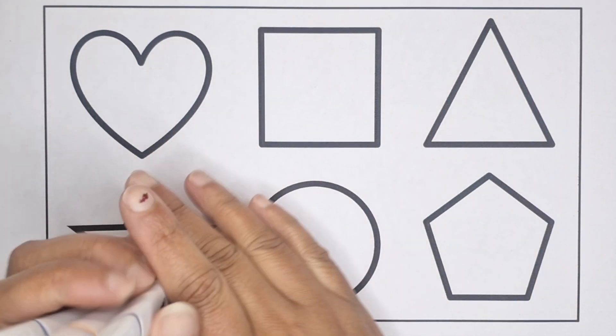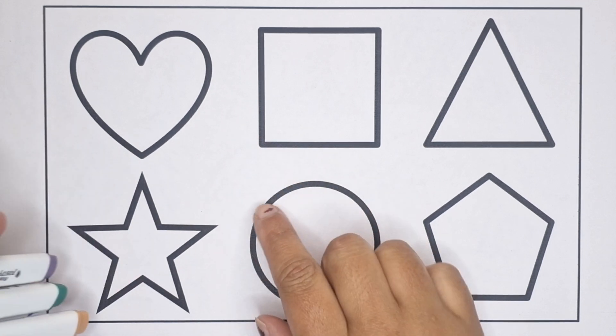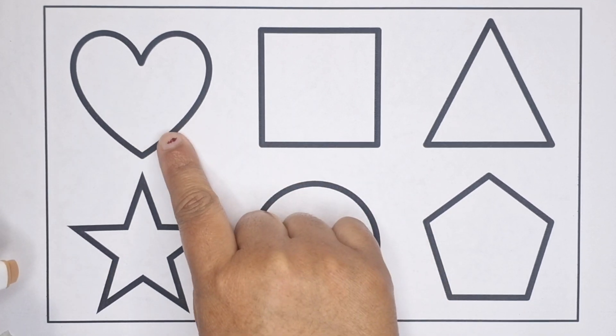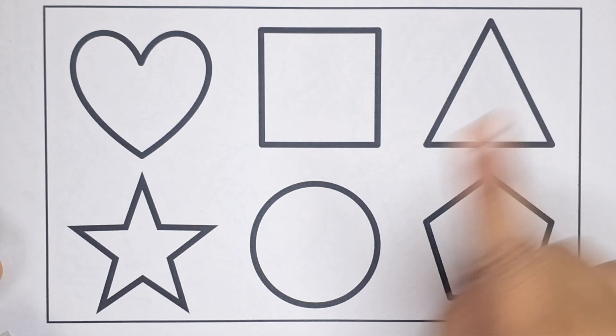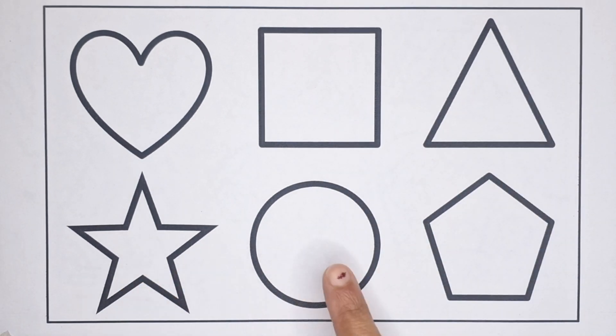In today's video, we will learn shapes name: heart, square, triangle, star, circle and pentagon. So, let's add a color in the shapes.